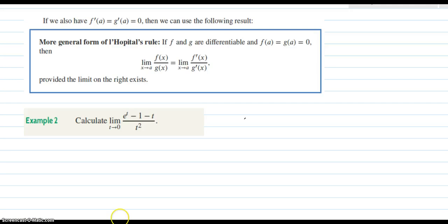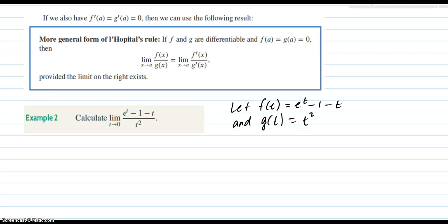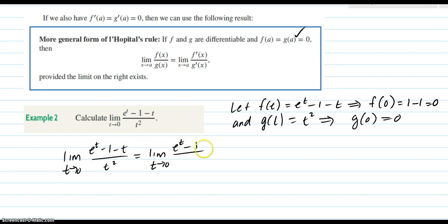So for example, let's look at this example. Let's let the numerator be the f(t), and the denominator be the g(t). So when we plug in, our a is 0 in this case, this would be 1 minus 1 minus 0. That would work. This one, just g(0), is 0. So we do get these conditions. They're both differentiable. They are continuous as well. But let's go ahead now and apply this. So what we're going to do is this is the limit as t goes to 0 of the derivative of the top, which we know is e^t, derivative of 1 is 0, minus 1, over 2t.